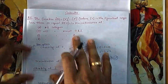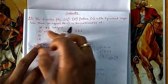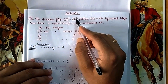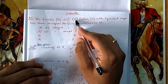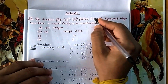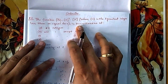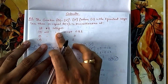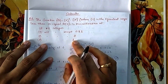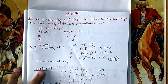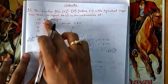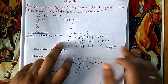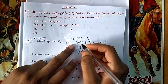In continuity, the first question involves f(x) = [x]² versus [x²], where [x] is the greatest integer function. You need to determine where this function is discontinuous. The options given are: at all integers, at integers except 0, at integers except 1, and at 0 and 1. You have to check at 0 and 1 whether it is continuous or not, then eliminate options.